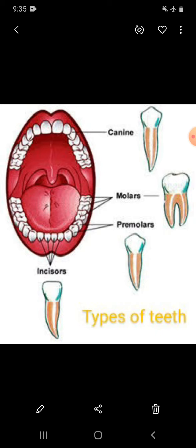Third, premolars — also called cracking teeth. These are broad and flat teeth. They grind food and break it into fine pieces. There are four premolars in each jaw. Fourth, molars — also called grinding teeth. There are six molars in each jaw.